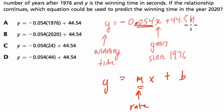44.54 is saying, well, that must be what's called the starting point or the starting time. When x is 0, that means it is 1976, 0 years since 1976.